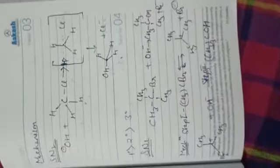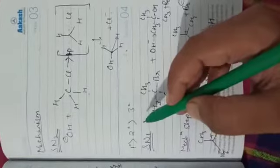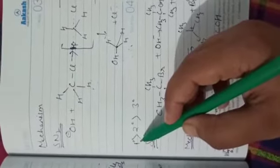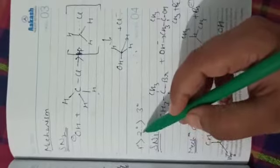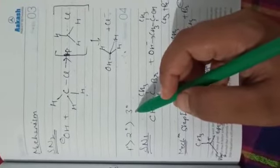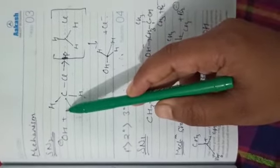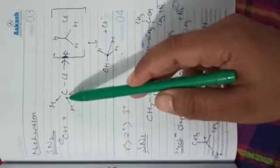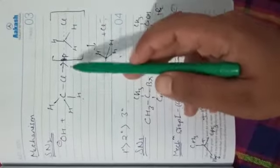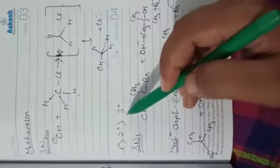The order of reactivity for SN2 among primary, secondary, and tertiary alkyl halides follows this pattern: primary alkyl halides are most reactive, followed by secondary, and tertiary alkyl halides are least reactive. Tertiary alkyl halides have bulky groups on the opposite side of the halogen atom, preventing the nucleophile from attacking the carbon atom properly, as it cannot find space to approach from the opposite side.